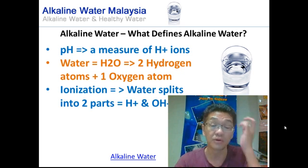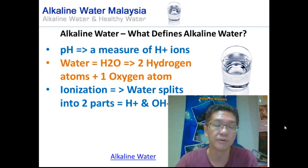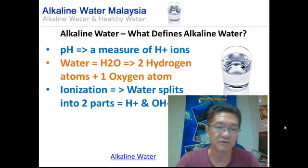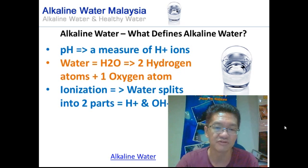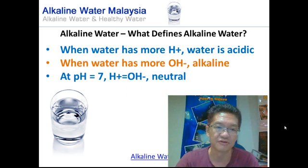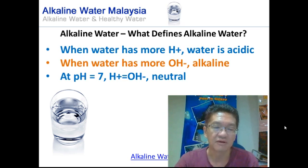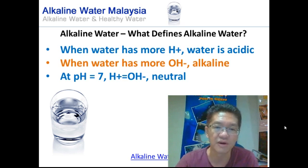As you all know, water is represented by the formula H2O, meaning there are two hydrogen atoms and one oxygen atom. One important characteristic of water is its ability to ionize — the process of ionization. When water is ionized, it splits into two parts: hydroxyl ions, represented by OH-, and hydrogen ions, represented by H+. When water has more hydrogen ions, the water is acidic. When water has more hydroxyls or OH-, the water is alkaline.